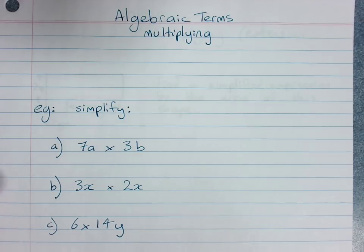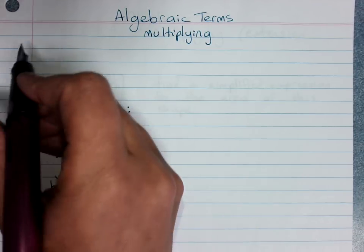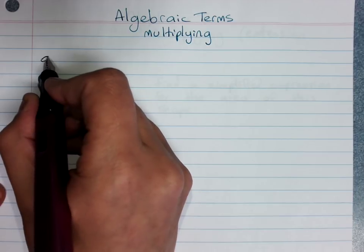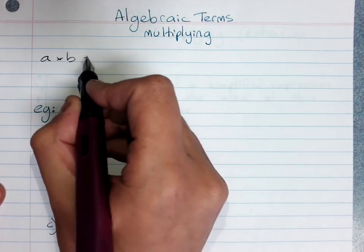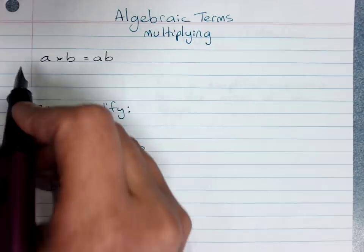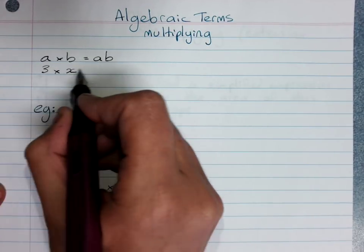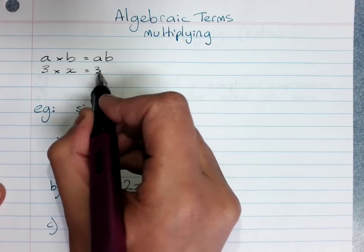Multiplying algebraic terms. You'll remember in algebra that if we have a times b we don't write the times sign, we just write ab. If we have 3 times x we don't write the times sign, we just write 3x.